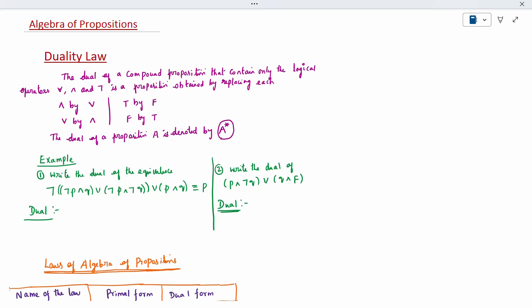For example, if it is for conjunction, the dual is disjunction symbol. When it is for disjunction symbol, the dual is conjunction symbol. When it is for true means false, false means true. It is denoted by the symbol star. The dual will be denoted by the symbol A star. How to write the dual?